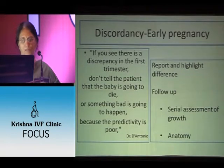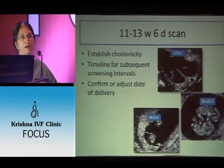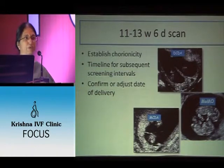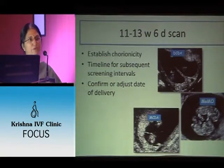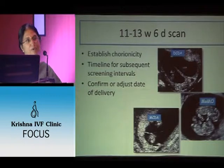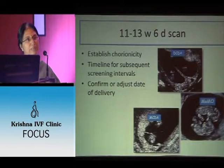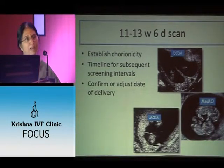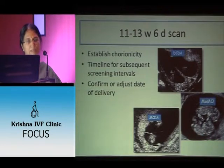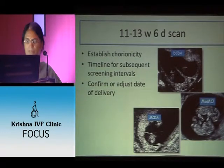Ask her to come for serial growth scans. The next scan for twins would be an 11 to 13 week, 6-day scan where we re-look at the chorionicity, and this becomes the timeline — or if it is the first time you are seeing this woman, it becomes a timeline for subsequent screening intervals. You check the chorionicity, see if there is a twin peak sign, a T sign, or no amnion, and decide the chorionicity.